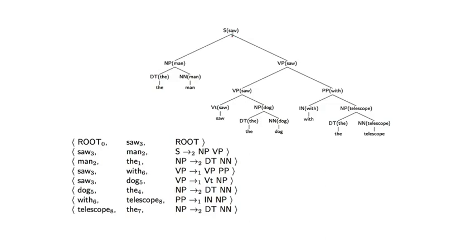So let me again take this tree, the man saw the dog with the telescope. This could be a gold standard tree or it could be the output from a lexicalized PCFG parser. And again we see that the non-terminals are all lexicalized. And the key idea is going to be that we can convert a tree to a set of dependencies. And let's see how we do this.